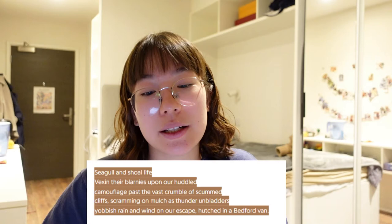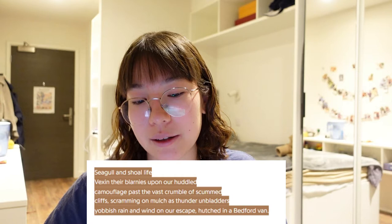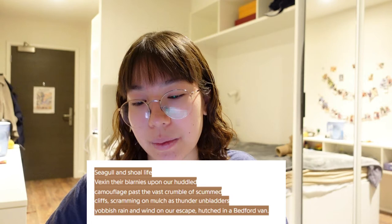The second stanza: 'Seagull and showlife, vexing their blarneys upon our huddled camouflage, past the vast crumble of scummed cliffs, scramming on mulch as thunder and platters, yobbish rain and wind on our escape, hutched in a Bedford van.' Seagulls and showlife return to natural imagery, and the sibilance couples animals with immigrants because they're repeatedly dehumanized. Ironically, birds are free to fly around and do whatever they want, and nobody says anything to them — but immigrants, treated as being on the same level as seagulls, have to crouch down unobtrusively and be hidden.